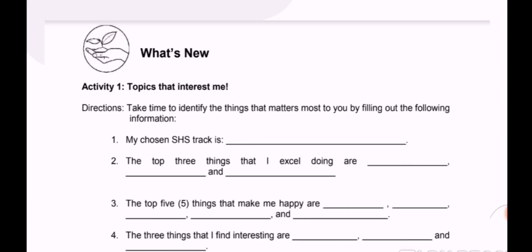What are the top three things that you excel at doing? These are things you do and you are good at—subjects where you have high grades, or sports where you excel and get awards and achievements.